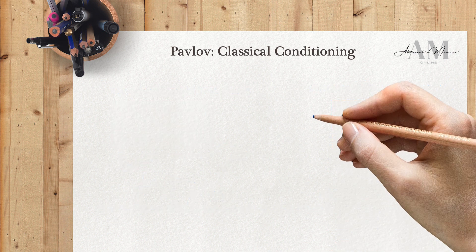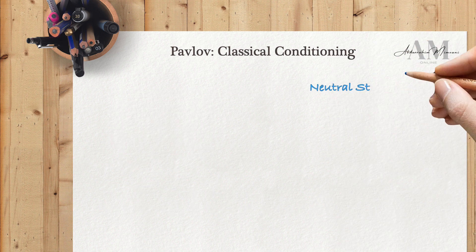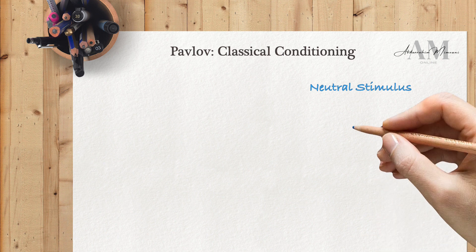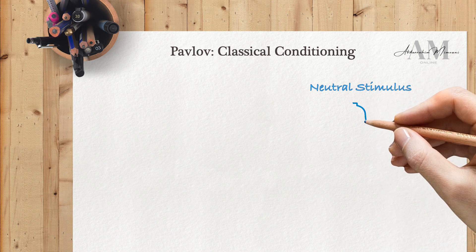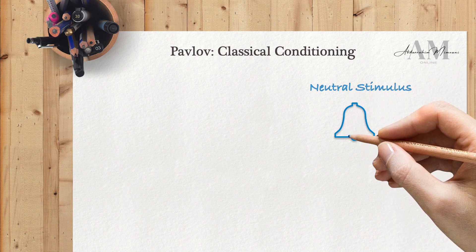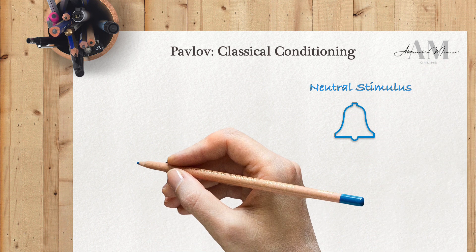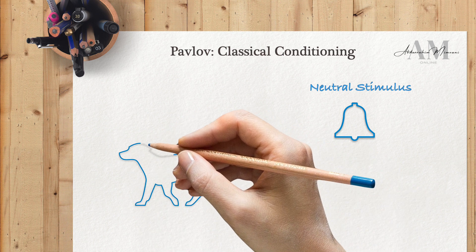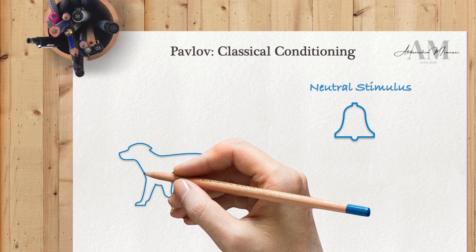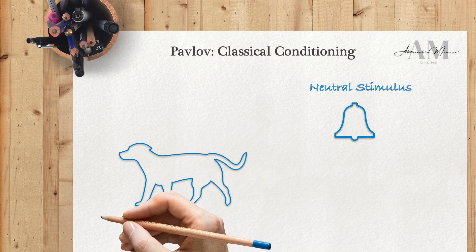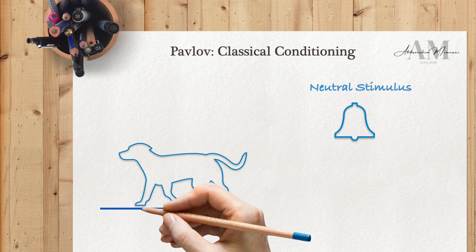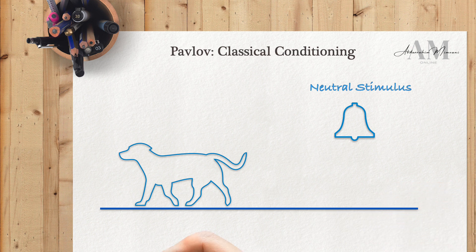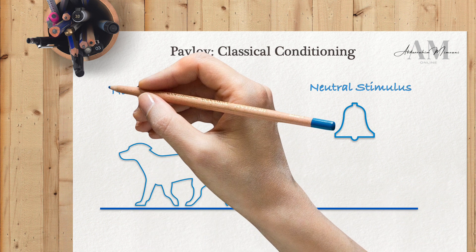While the meat induces salivation naturally, even without prior experience or training, other stimuli like the sound of a bell do not elicit salivation. Since these stimuli do not impact the specific response, they are classified as neutral stimuli.